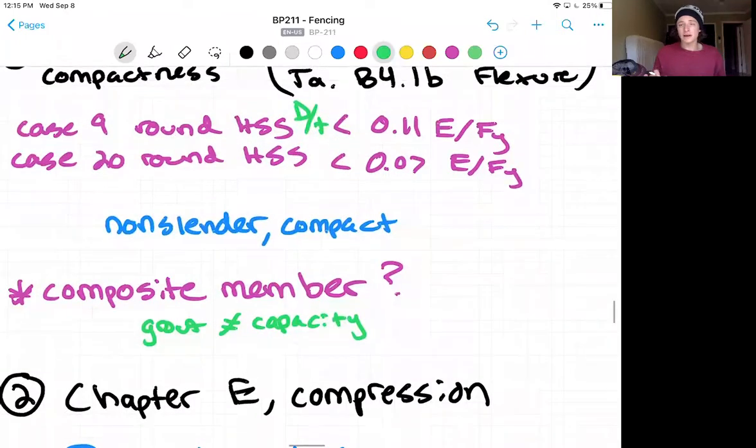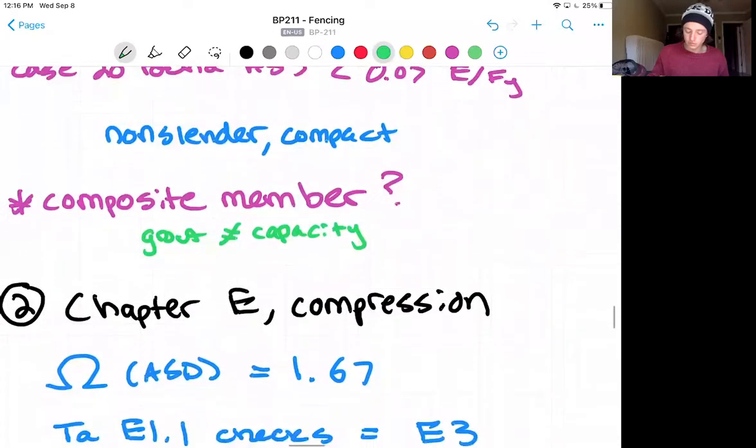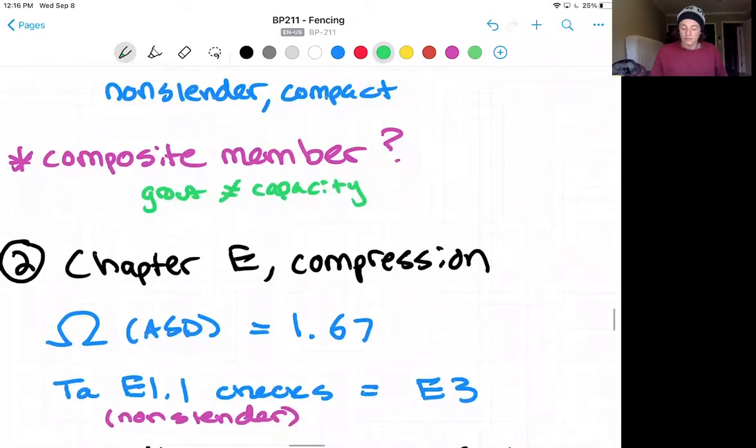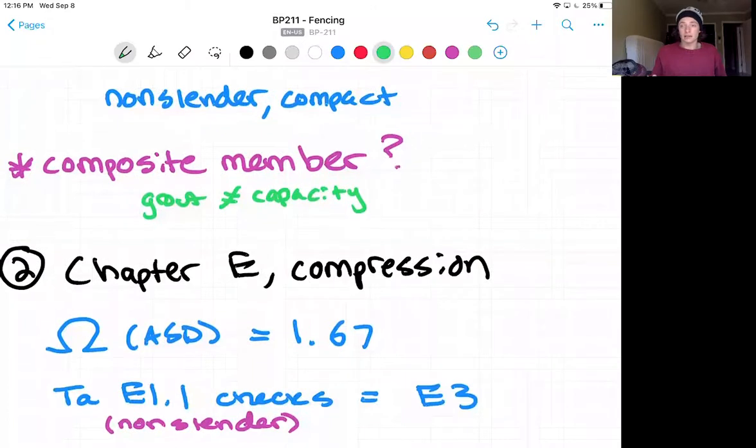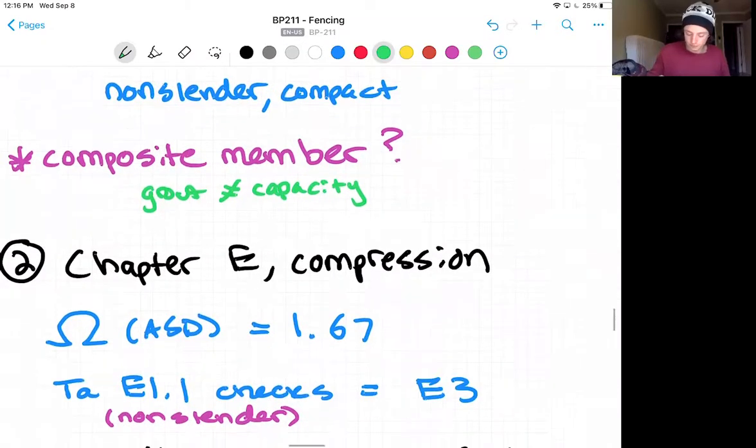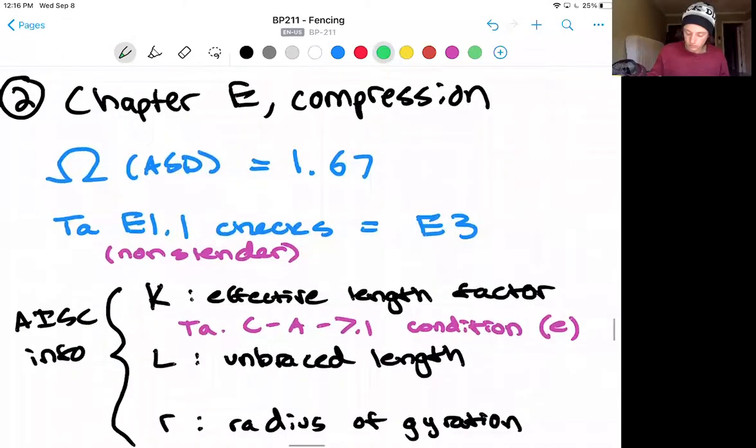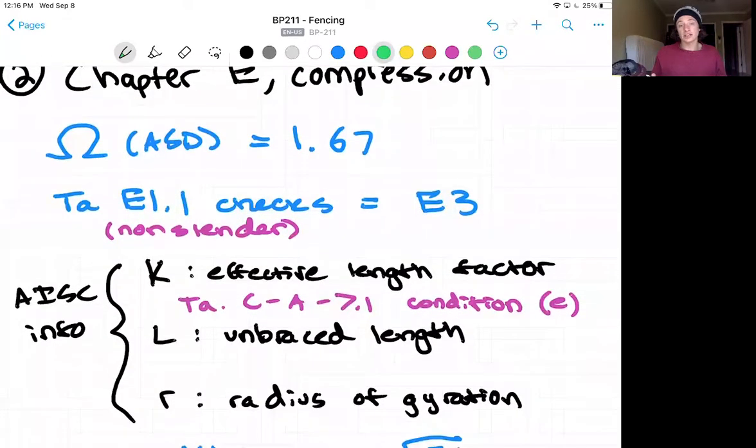So first we'll navigate to chapter E and we'll look at compression or the axial load check. We find that our factor of safety for ASD analysis is 1.67. In table E1.1 for a non-slender round HSS member shows we only need to do the E3 check.